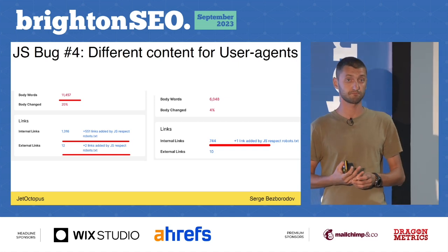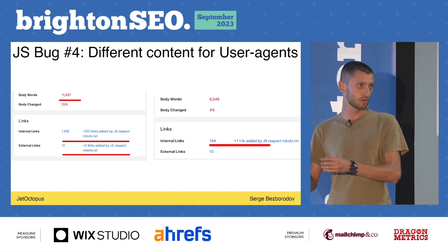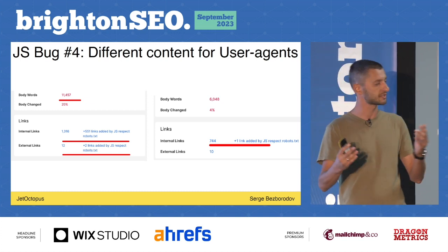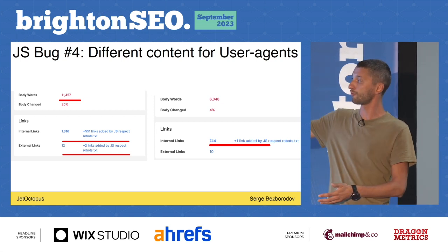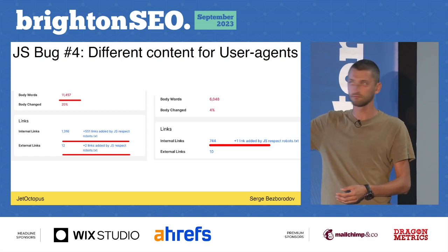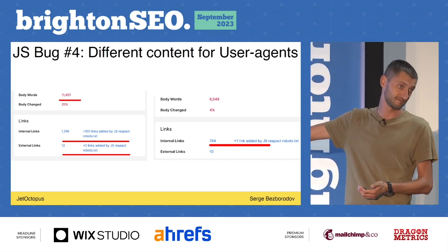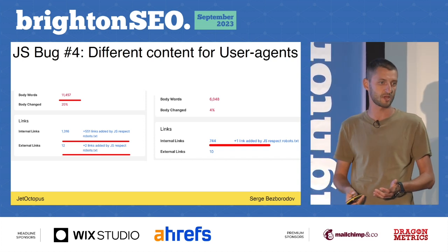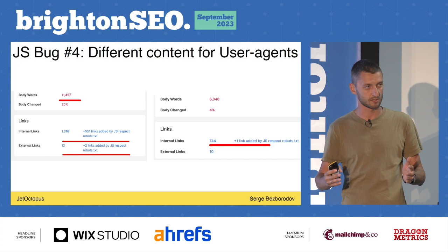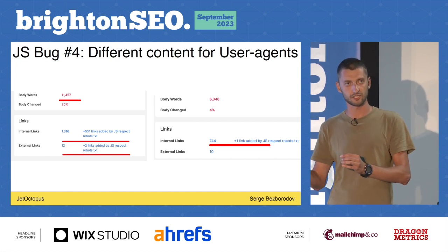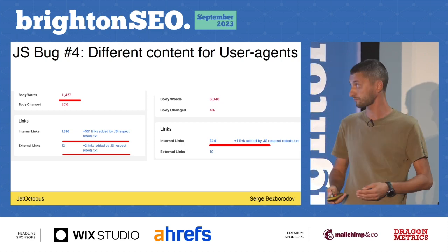Different content for different user agents. You open your browser — it's fine. You start looking in Google and realize it's not the same content as you see. A case: for a user, JavaScript adds 500 internal links; for Googlebot, just one. And it's an e-commerce website with products. Test your pages with Chrome DevTools using different user agents. Crawl your website with different user agents and compare them.